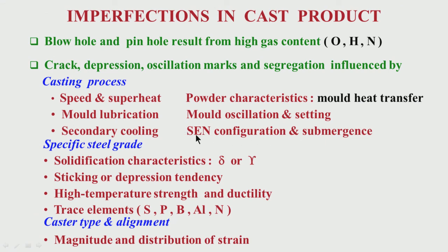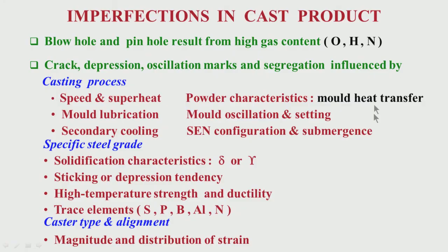Another important aspect is the subentry nozzle configuration and submergence. Liquid steel comes from the tundish to the mold through a subentry nozzle — a refractory nozzle. Configuration means the port size, shape (circular or elliptical), and the angle of the port — whether steel comes out horizontally or at an angle. Submergence means how deep the nozzle is submerged in the mold. These determine turbulence and heat transfer in the mold.